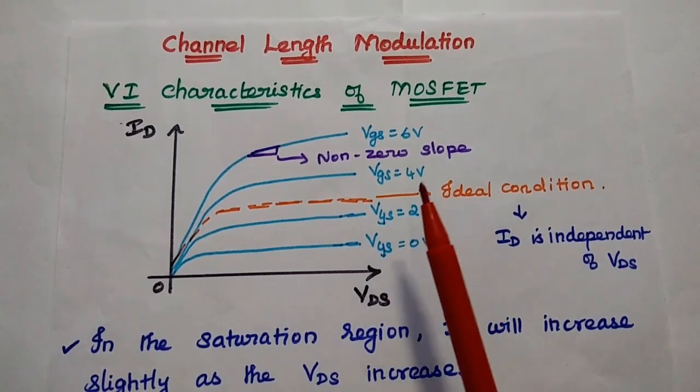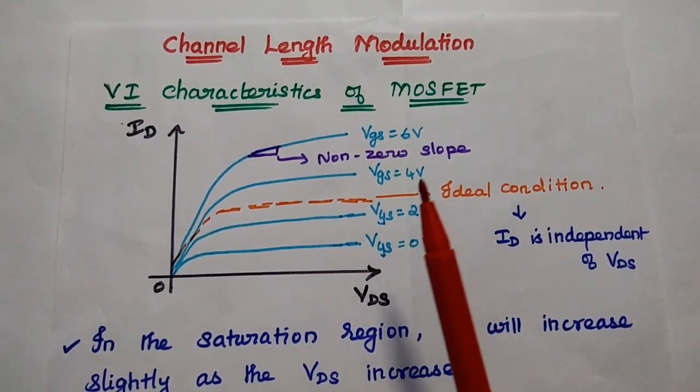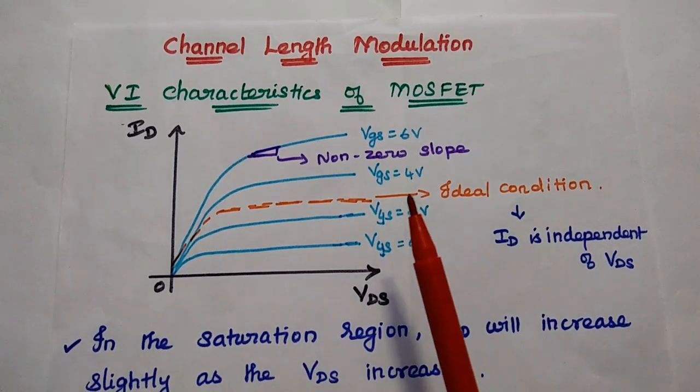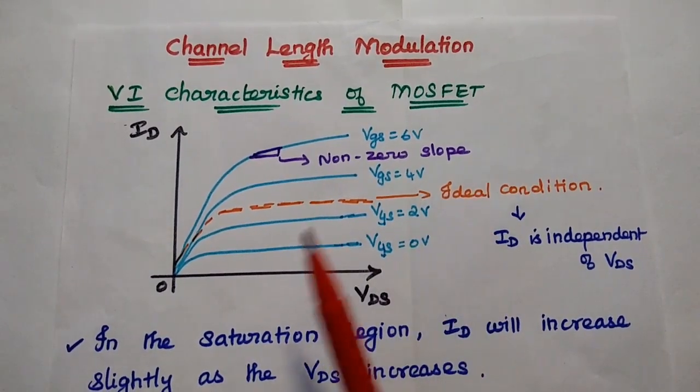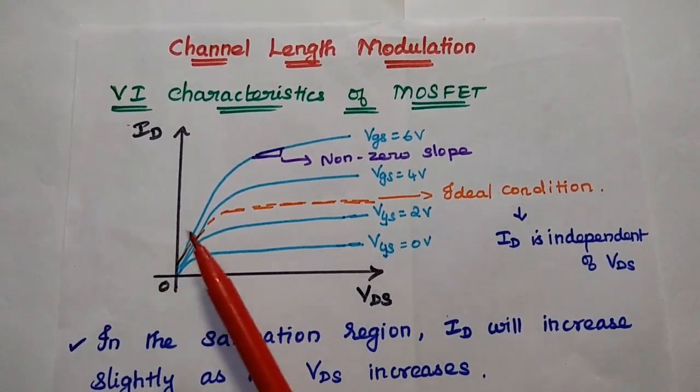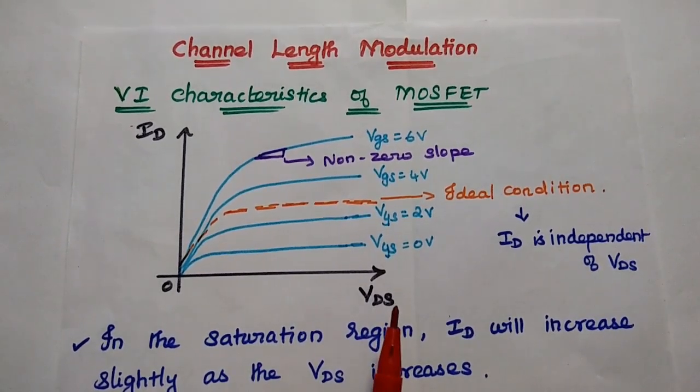Channel Length Modulation is an important concept in MOSFET. We can consider the output characteristics of MOSFET, which is the drain current versus the drain source voltage.